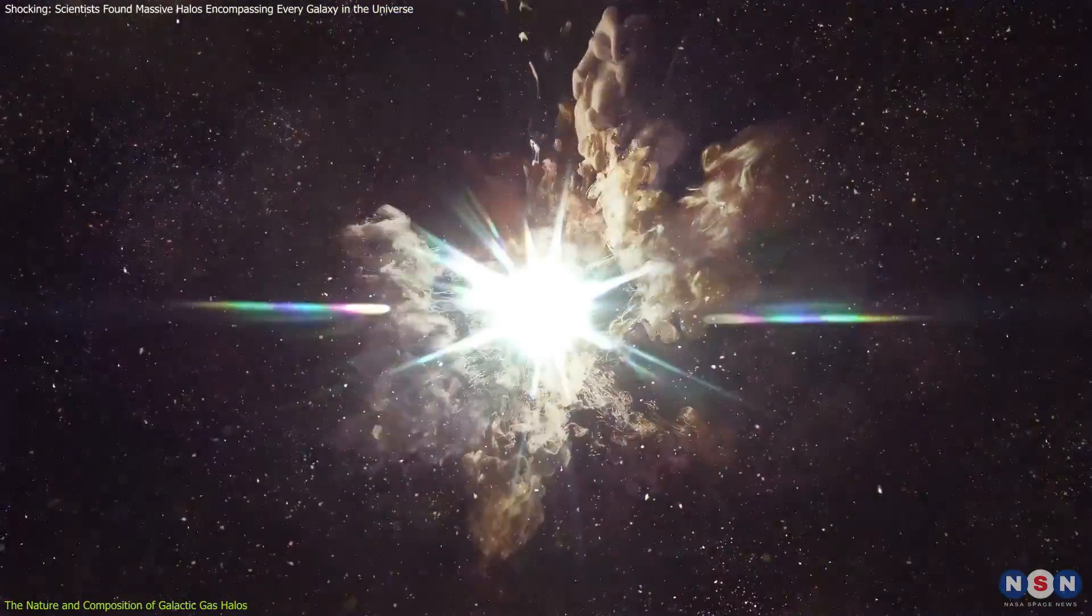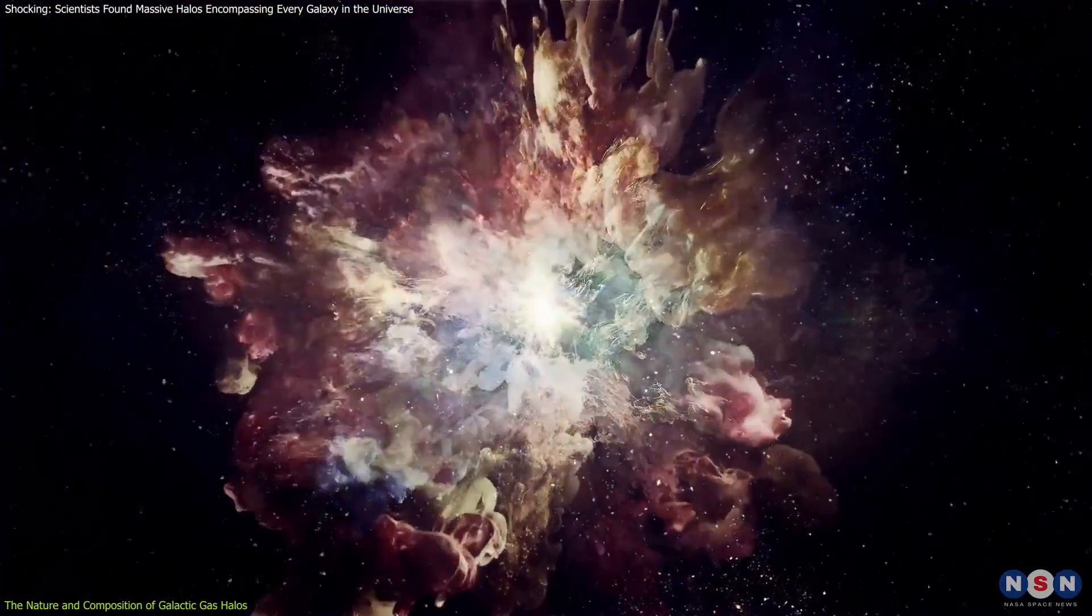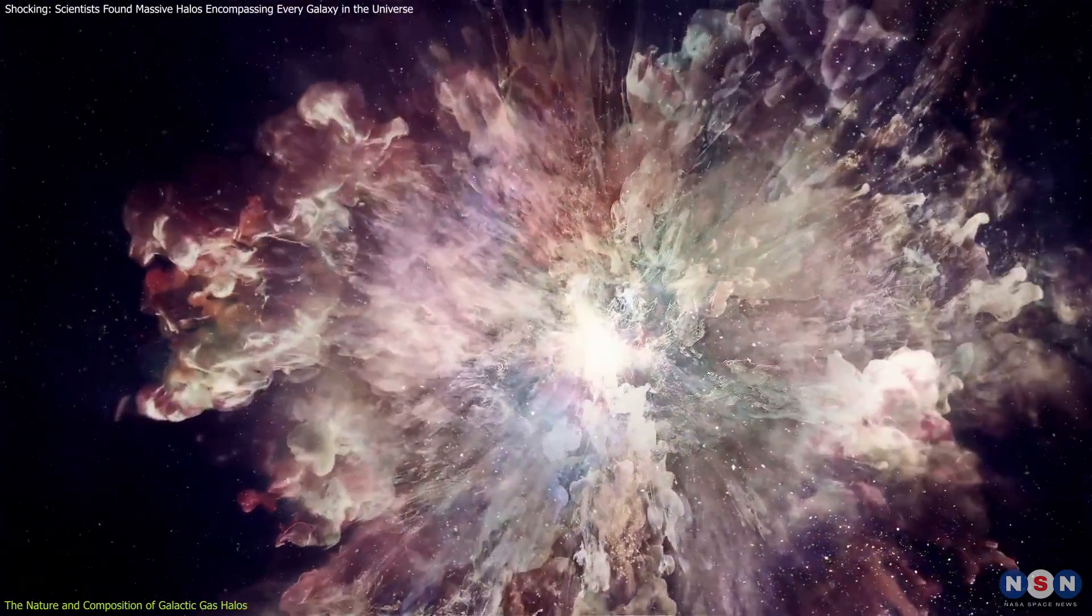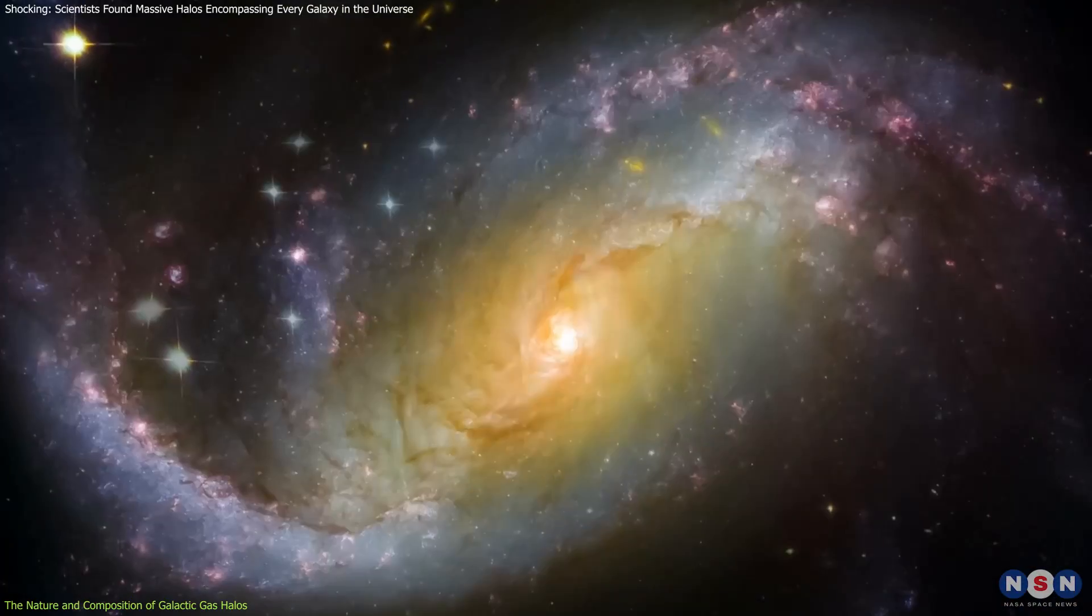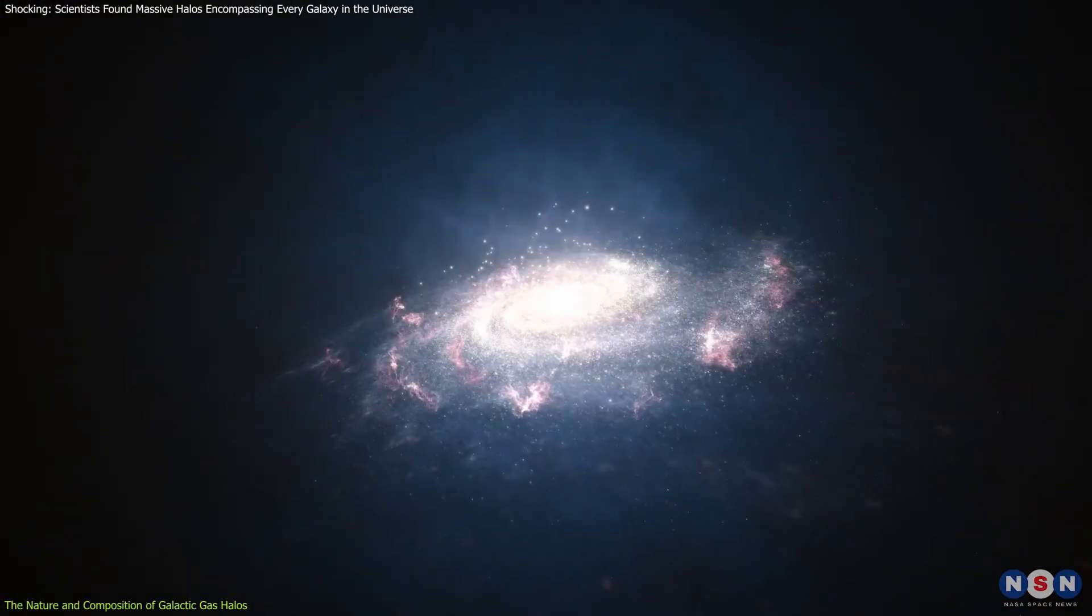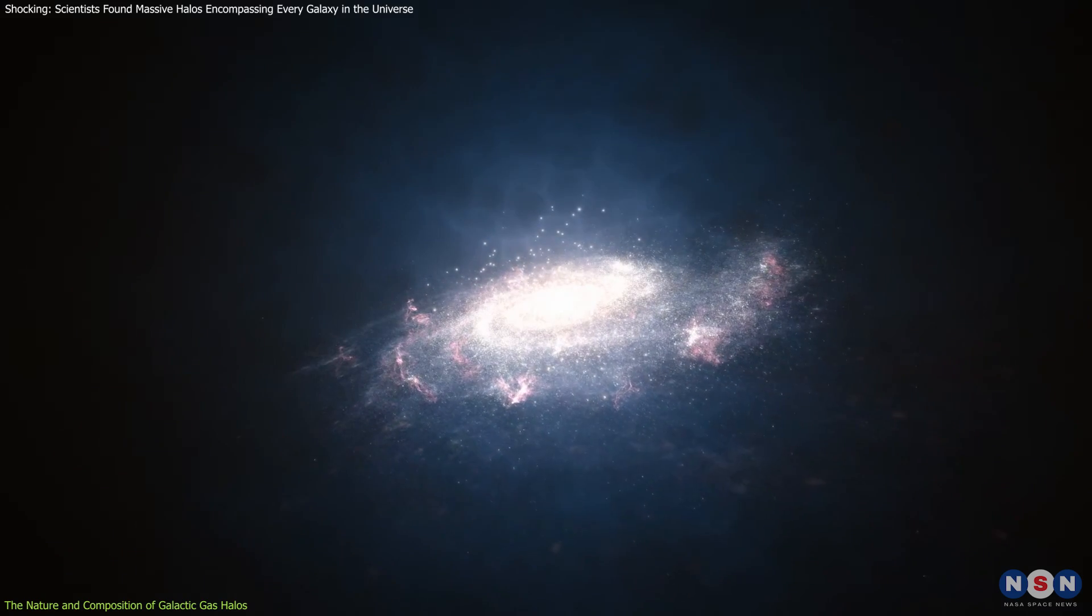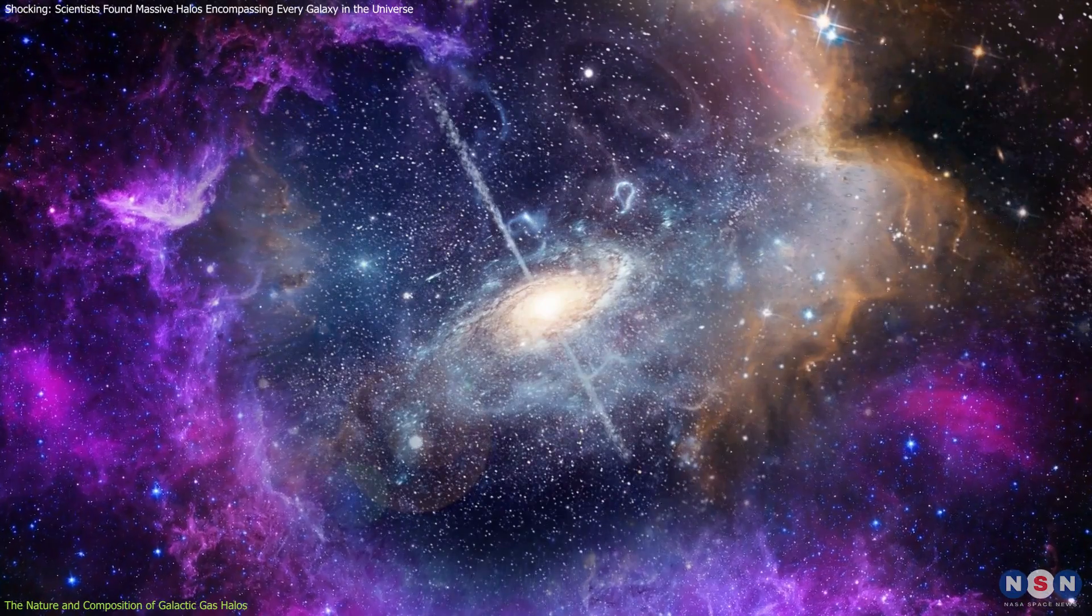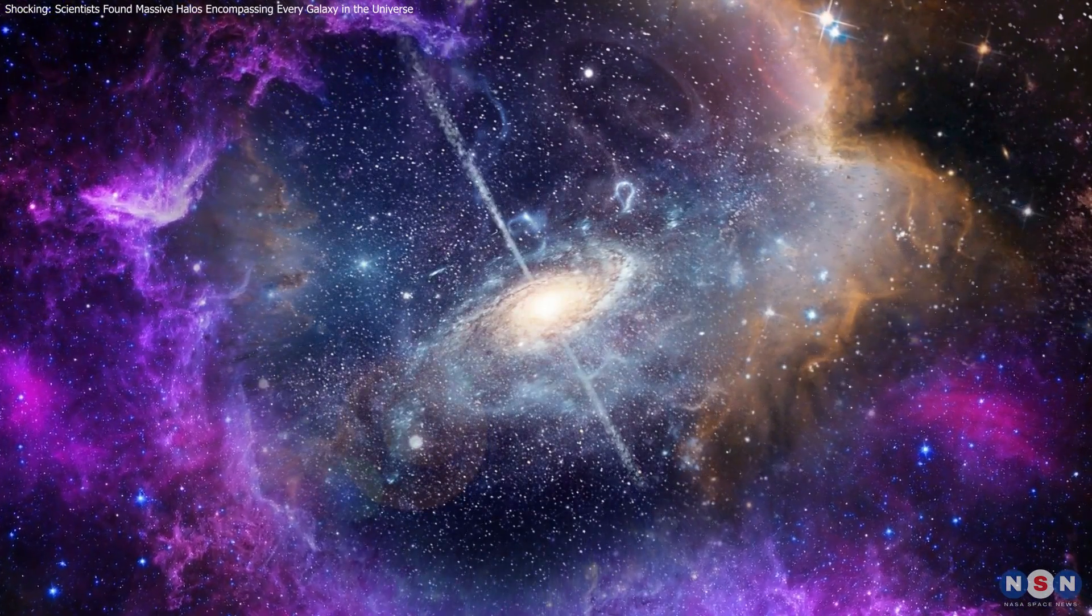Conversely, powerful events like supernovae can expel gas from a galaxy back into the halo, creating a cyclical exchange of matter that is essential to a galaxy's growth and evolution. This dynamic makes halos not just passive structures surrounding galaxies, but active participants in the cosmic cycle of creation and destruction.